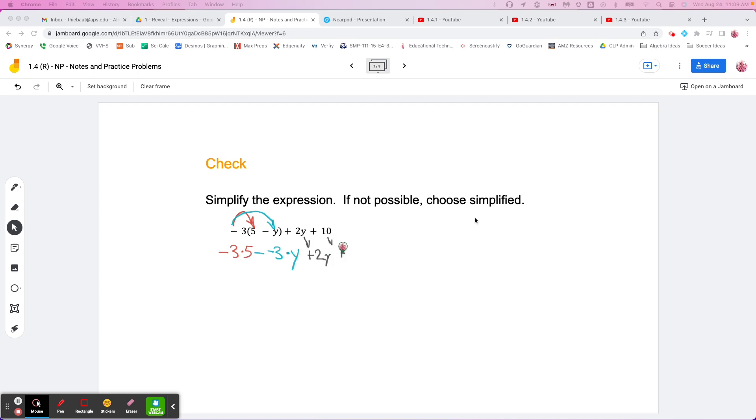I multiplied these because they're inside the parentheses that the negative three is next to. This says negative three times all this stuff.